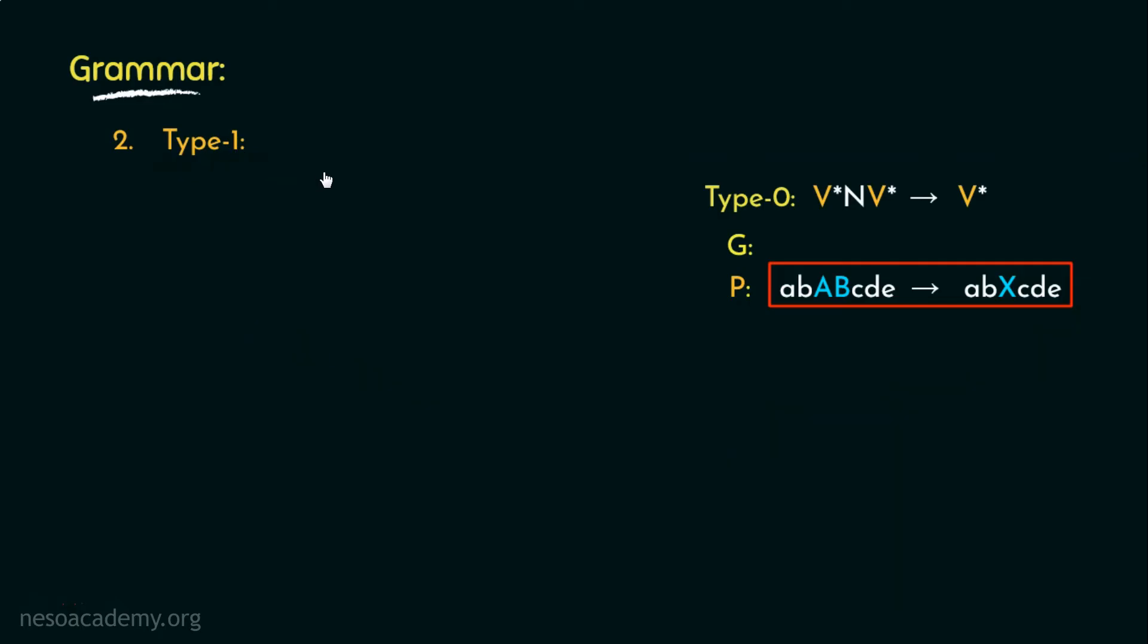So, in case of type 1, the production rules are of the form alpha A beta can be rewritten as alpha gamma beta. Where A is a non-terminal and alpha, beta and gamma are any strings over N union T. That is, these belong to V star. Now, structure wise it is as same as type 0. Let me illustrate. If we compare these two structures side by side, N is actually A in this case.